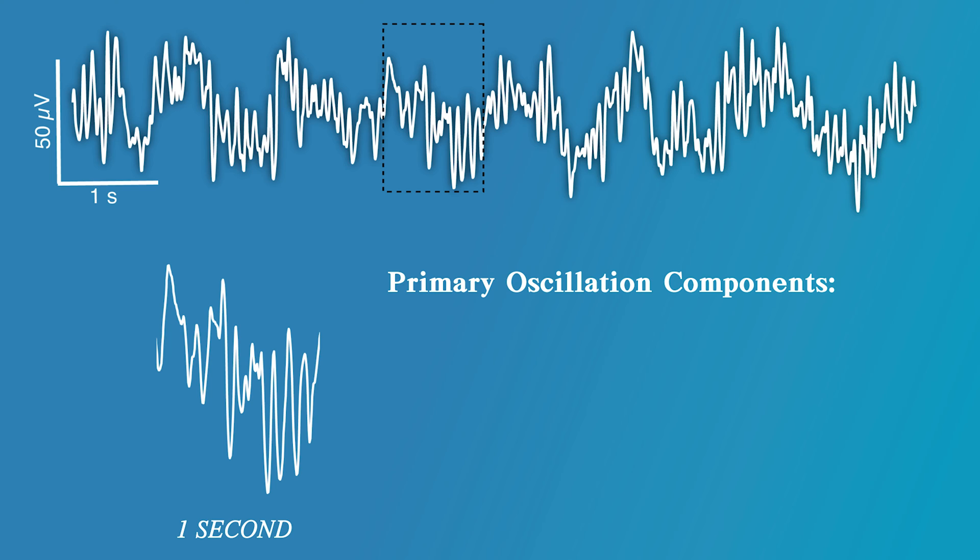If you are practiced in reading the EEG waveform, you may be able to visually isolate individual oscillation components that combine to form the waveform. Consider this waveform for an anesthetized patient and let's grab a short, one-second piece of it. There appears to be two primary oscillations that make up this signal.